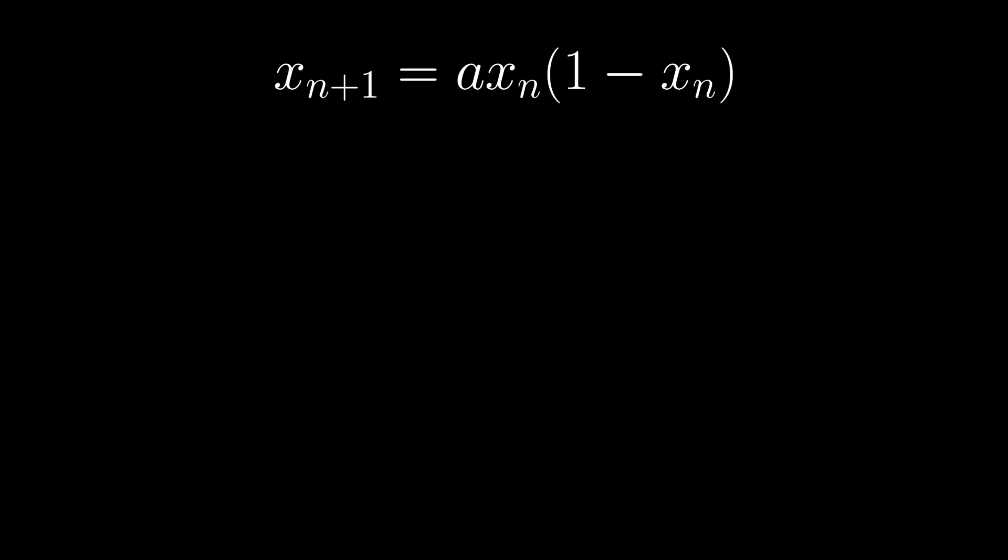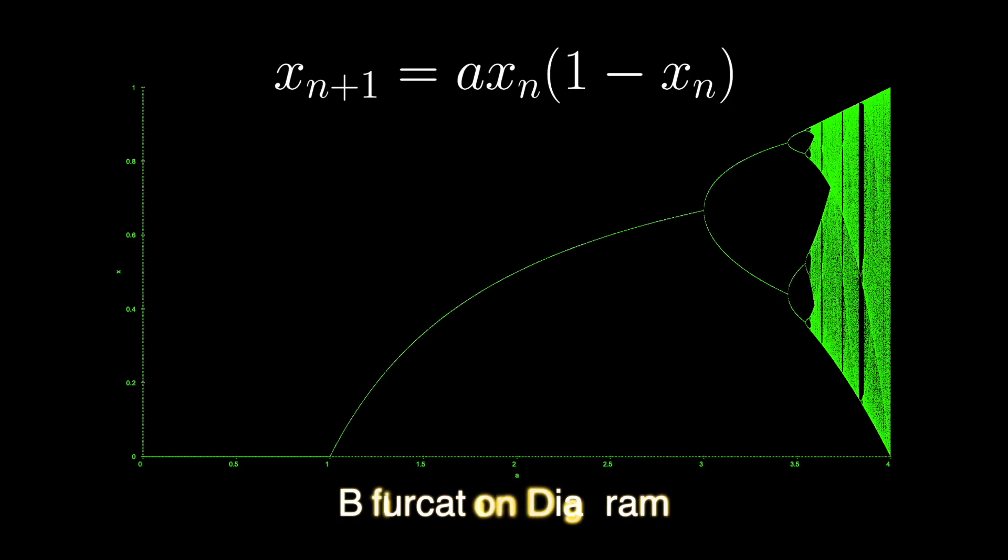We plotted the behavior of variable X with different values of A in this diagram. This allowed us to see how as A increases, the map goes from a single fixed point to cycles of 2, 4, 8, etc., and then hits a value where the map starts behaving chaotically. The Hénon map is similar.